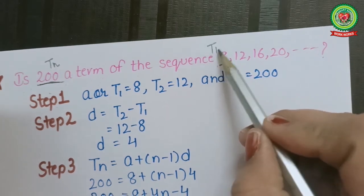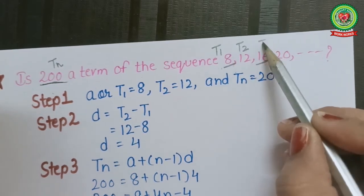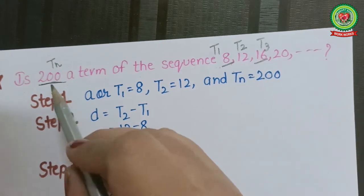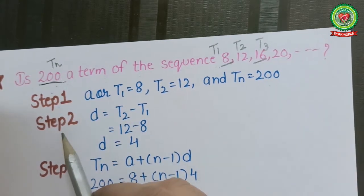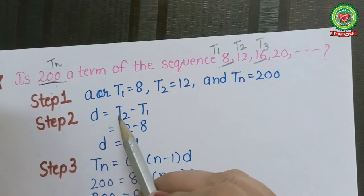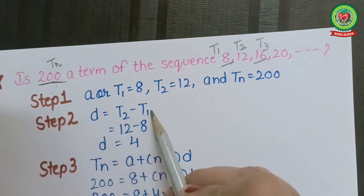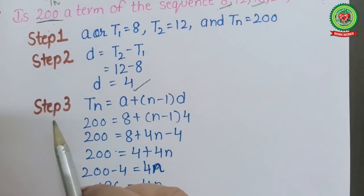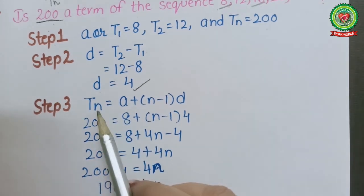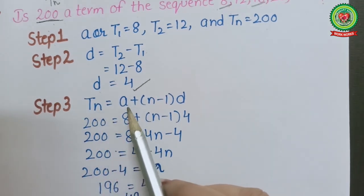Step 2: common difference d = t2 - t1. We will get the value of common difference, which is 4. Now step 3: the general term of an AP is tn = a + (n-1)d.